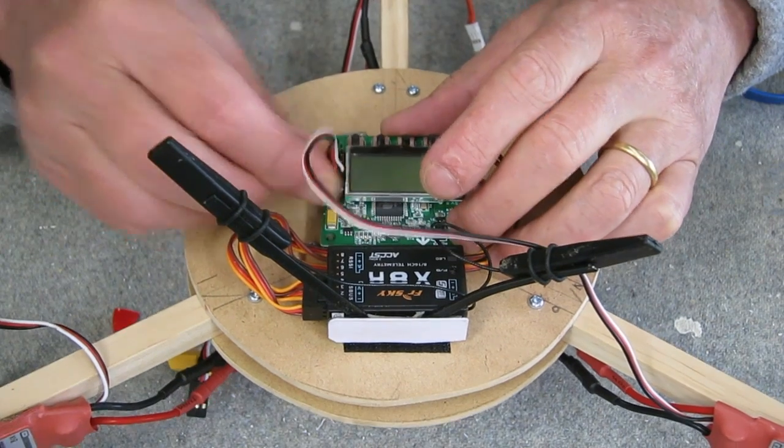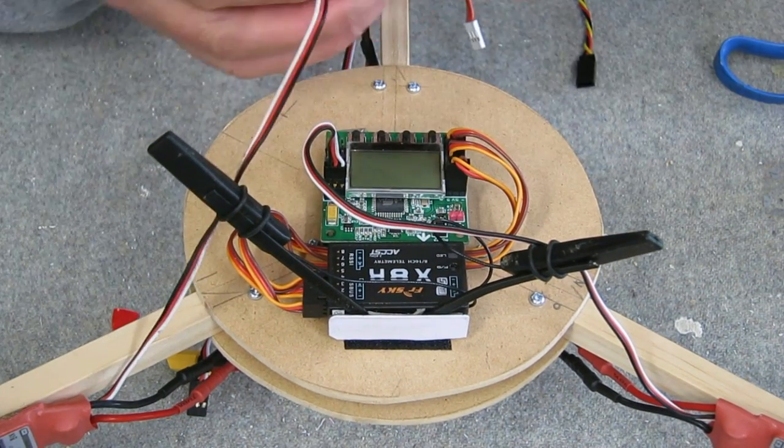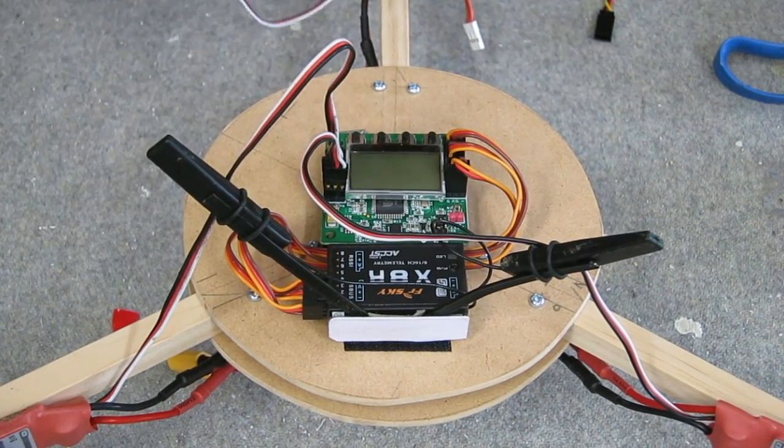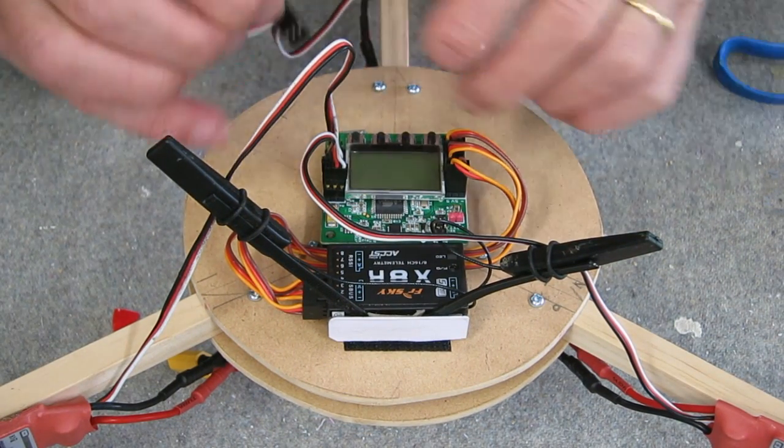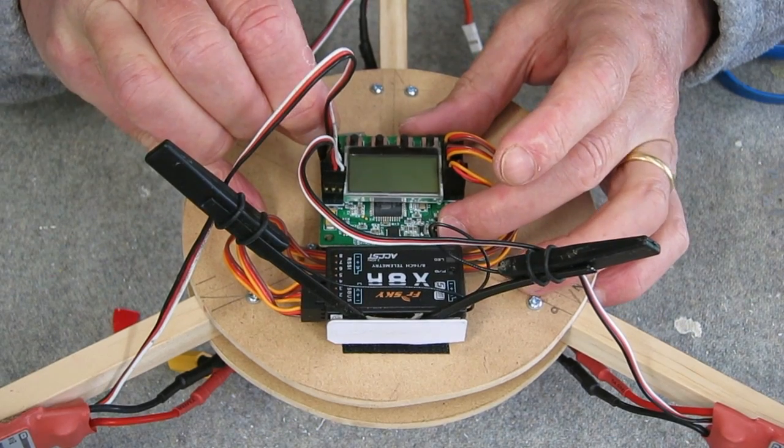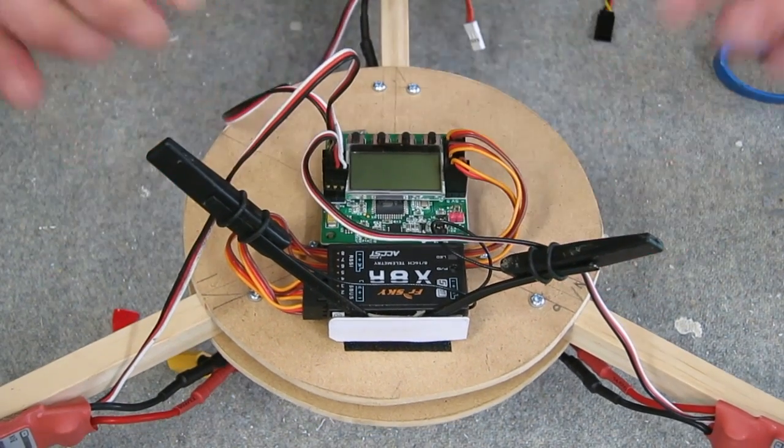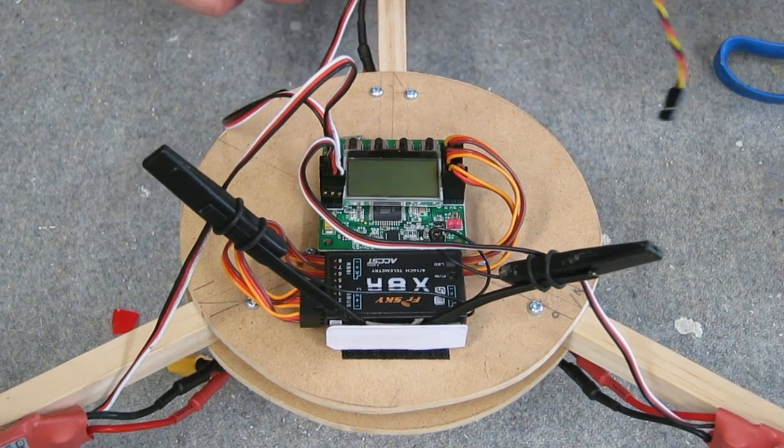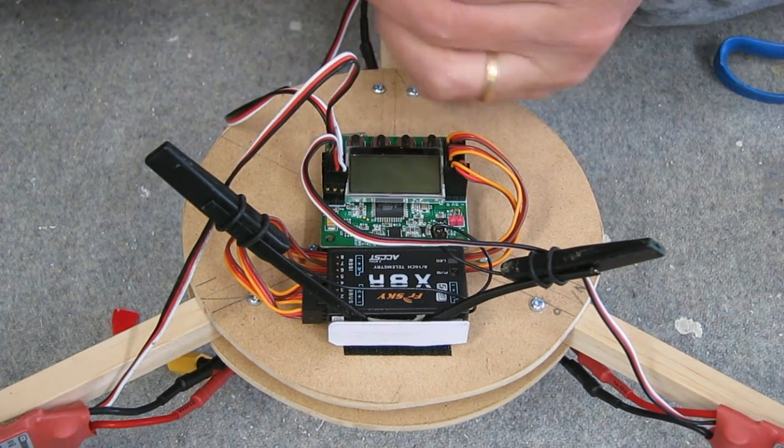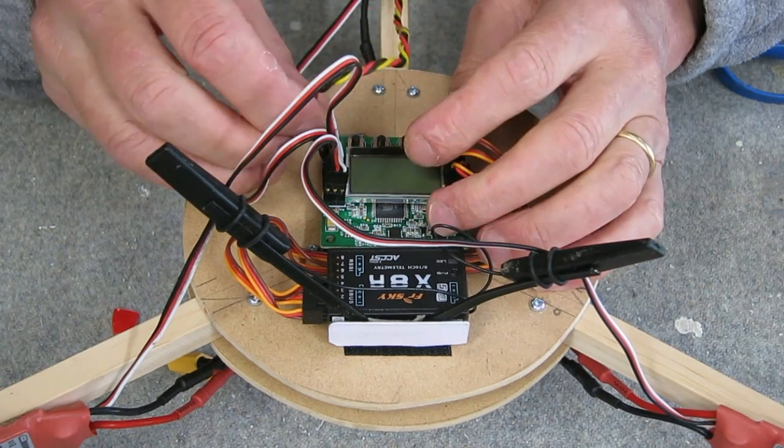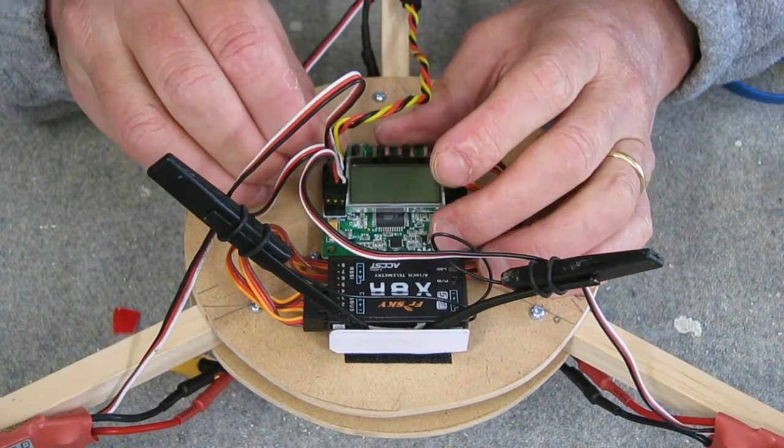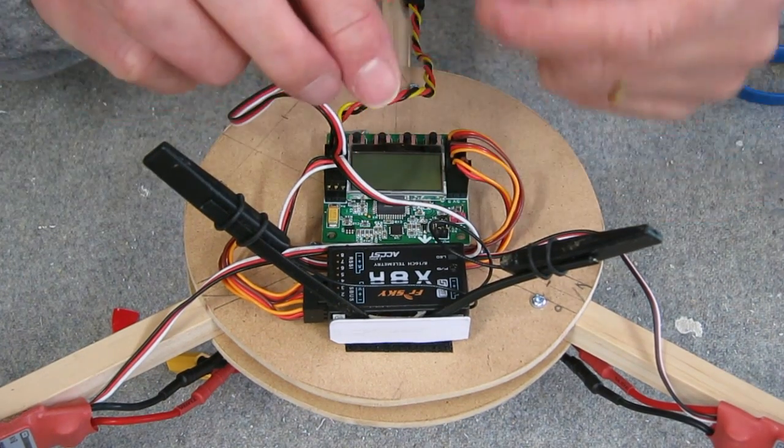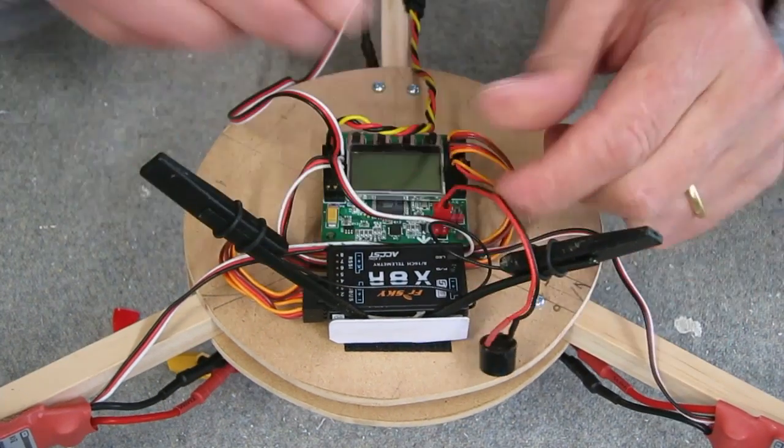Now I'm plugging the motors in to the output side of the KK2 board. Motor 1 which is front left goes on M1, motor 2 which is front right goes to M2, the tail motor M3, and the tilt mechanism goes into M4. Have a look at David Winterstahl's KK2 setup video to work out all these connections. I'm now connecting the buzzer that comes with the KK2 board.